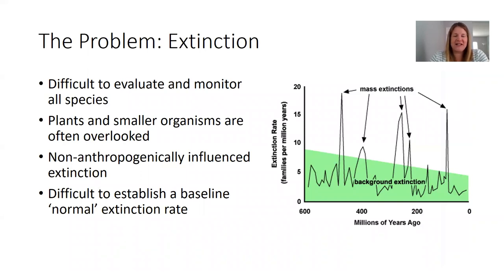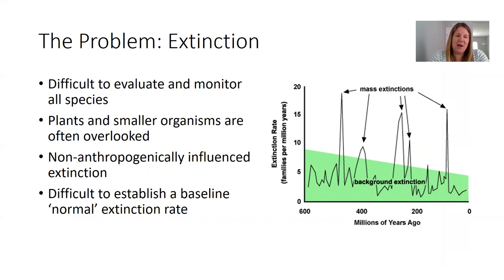Extinction can be difficult to evaluate and monitor given how many plant and animal species exist on this planet — it's really not super feasible for scientists to track all of them. Plants and smaller organisms are often overlooked. When we focus on wildlife conservation, we tend to look at the so-called charismatic megafauna. People know about elephants and pandas, but not about dicots or many insect species. So conservation monitoring is really uneven — geared toward mammals, reptiles, amphibians, and birds, and less so toward plants and insects.